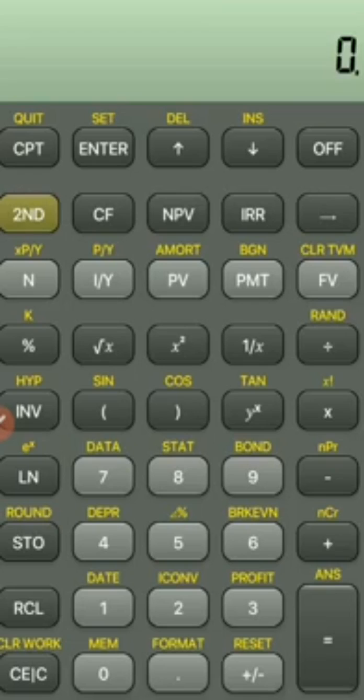On the calculator, look at key 7, which has DATA above it. Press Second + 7 to access the DATA function. It's possible there will be previously stored values, so press Second + Clear Work to clear them.